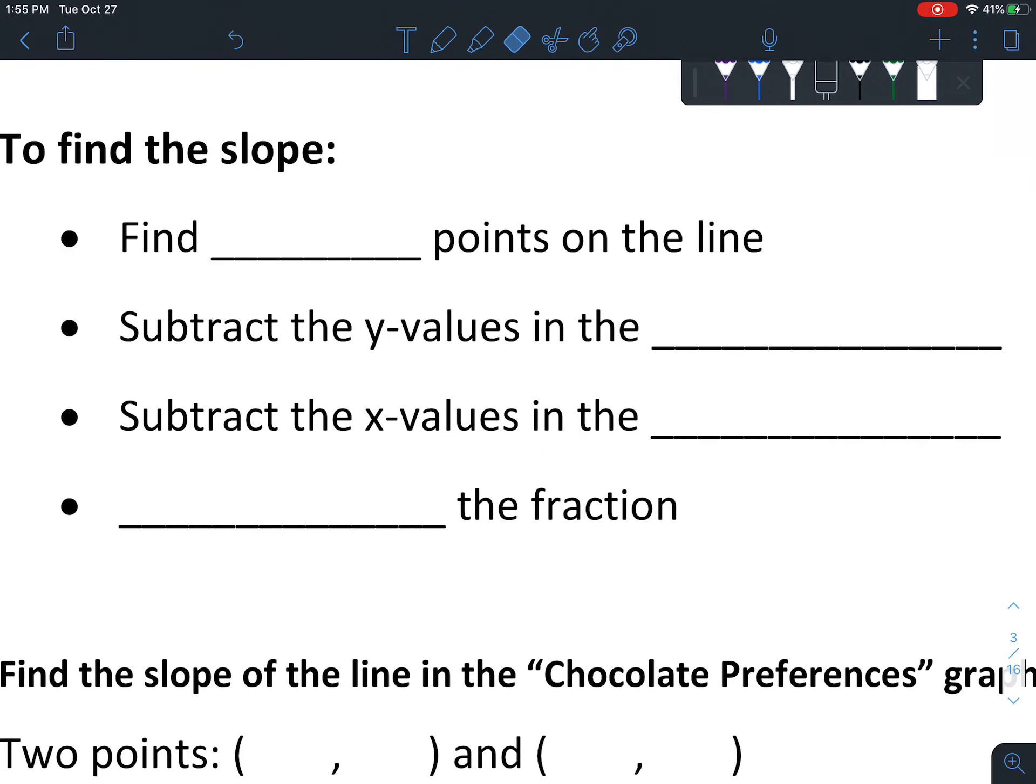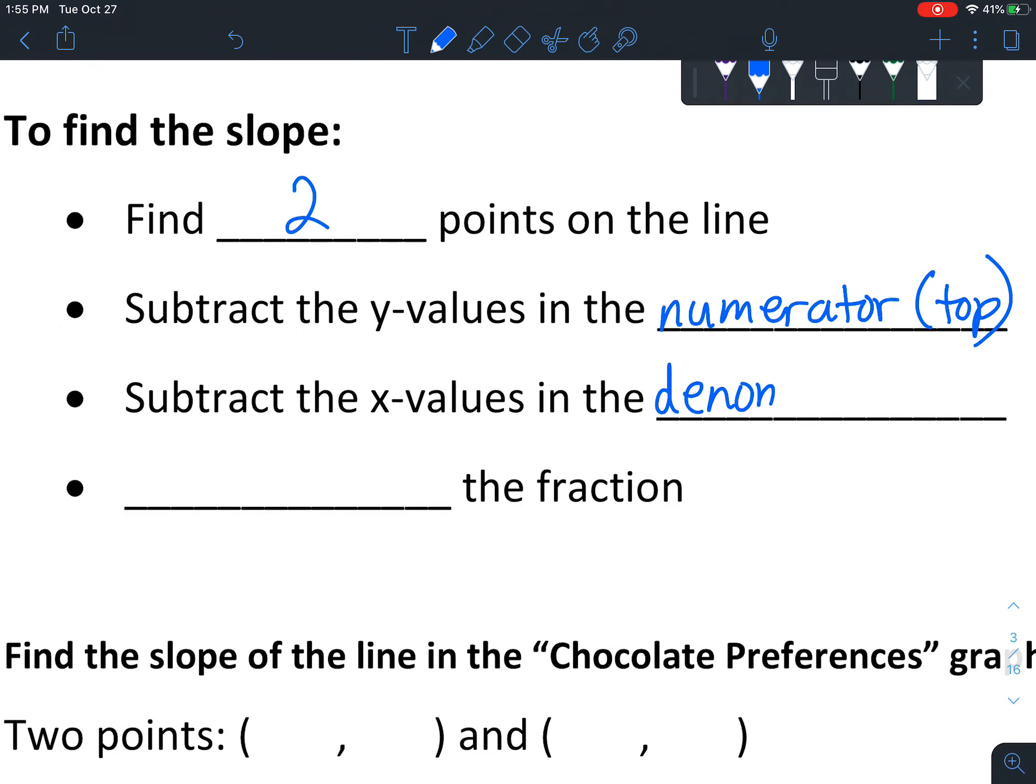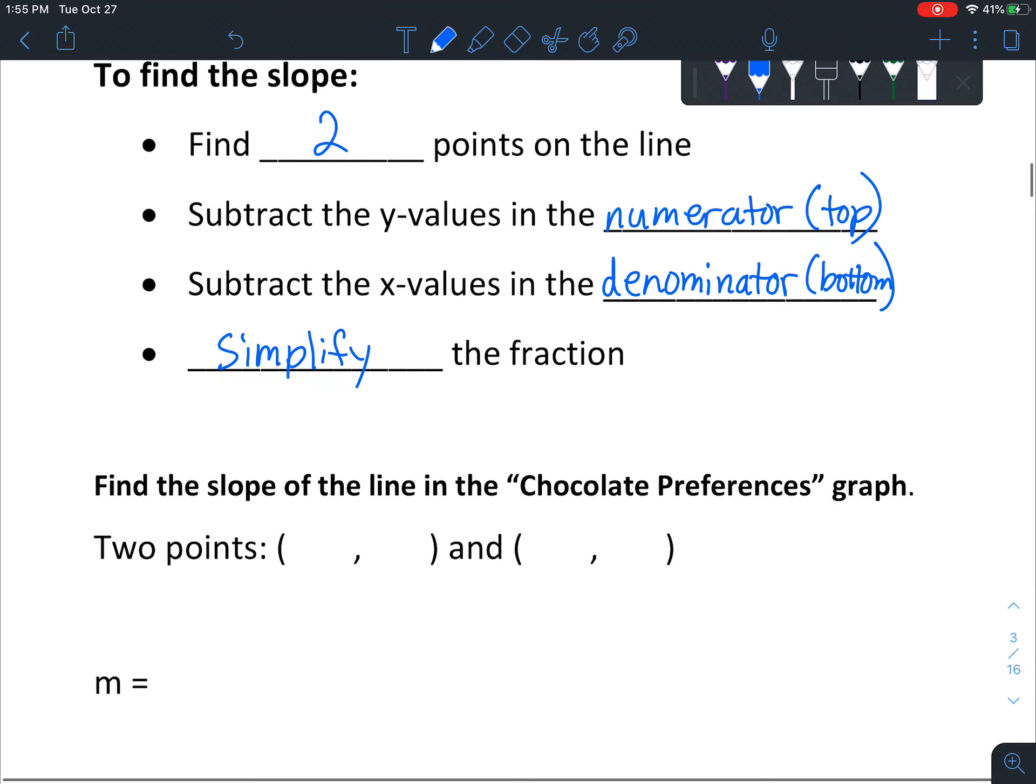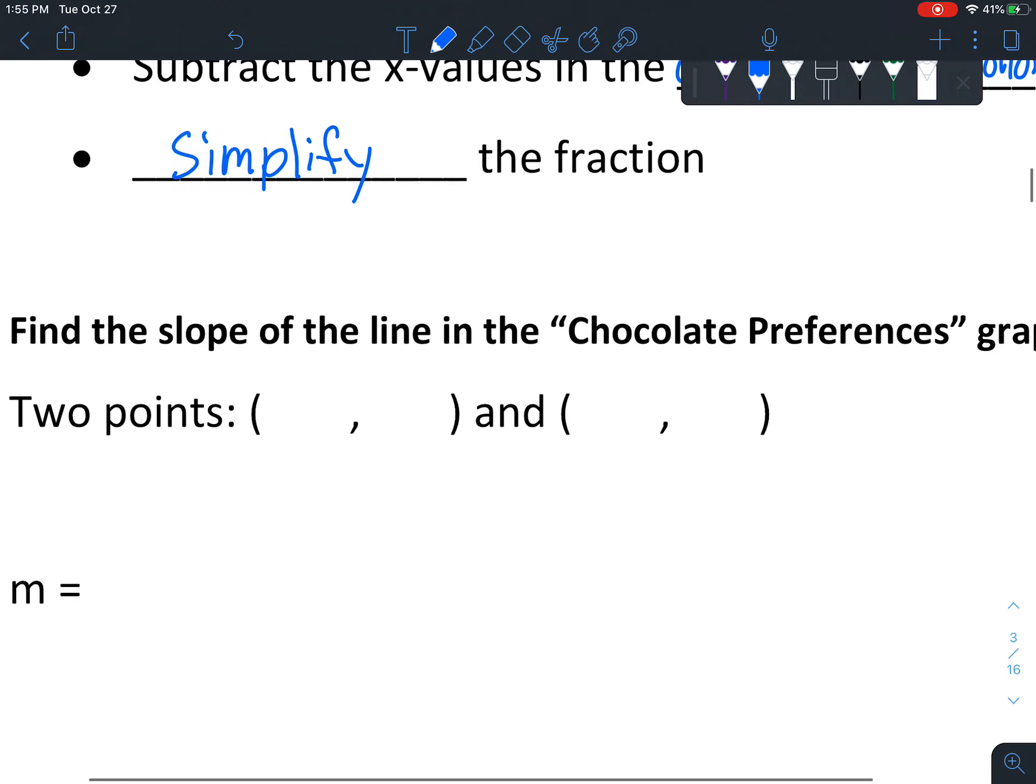So here are the steps to find the slope. Find two points on the line. Subtract the y values in the numerator, which is the top. Then subtract the x values in the denominator, which is the bottom. And then you're going to simplify the fraction. Sometimes it can be left as a decimal. It really depends on your situation. Sometimes it's a whole number, if the two numbers divide evenly.